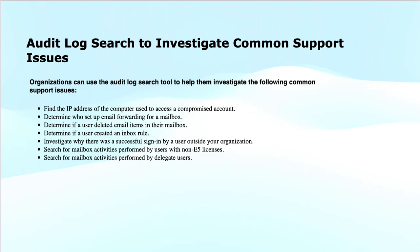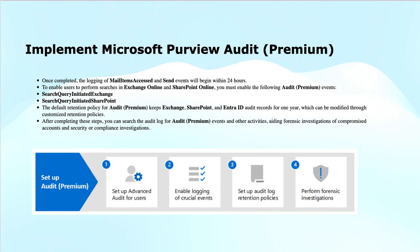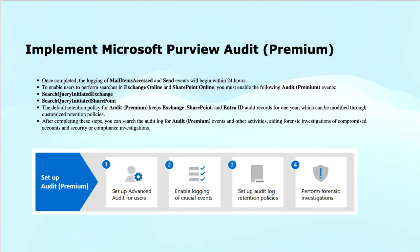Microsoft Purview Audit Premium provides advanced features designed specifically for organizations that conduct forensics and compliance investigations. This includes increased audit log retention up to 10 years, access to crucial events that help determine the scope of compromise, and higher bandwidth access for faster access to the Microsoft 365 Management Activity APIs. Audit Premium is available for organizations with Office 365 E5, A5 or G5, or Microsoft 365 Enterprise E5, A5 or G5 subscriptions. Users must be assigned an audit premium license so that audit logs will be generated when users perform these events.